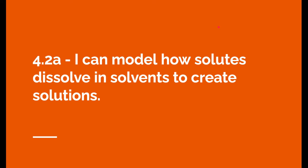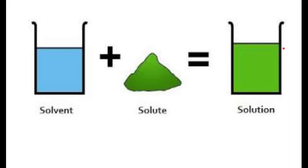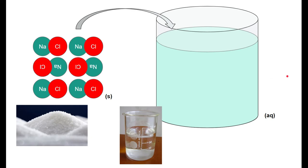All right, let's go on to 4.2. I can model how solutes dissolve in solvents to create solutions. So this is the simple story. A solvent is just the thing that is doing the dissolving. Typically, that's water. A solute is the substance that is being dissolved, like a powder that could be sodium chloride. When you stick the solute in the solvent, it dissolves into a solution.